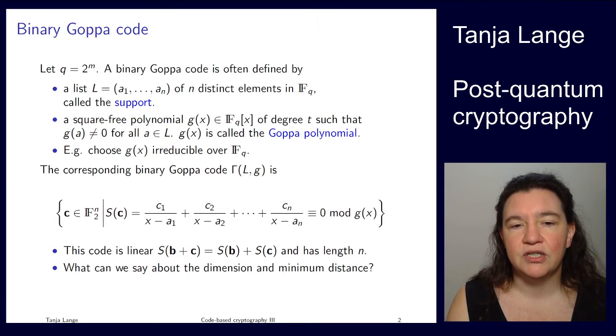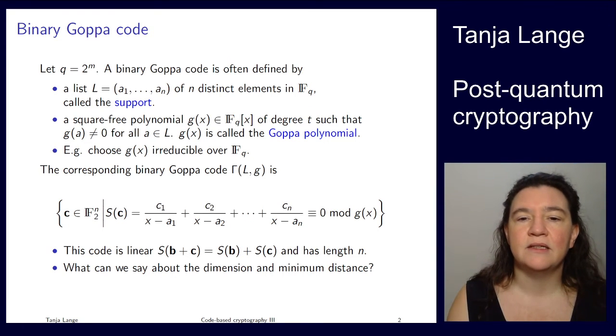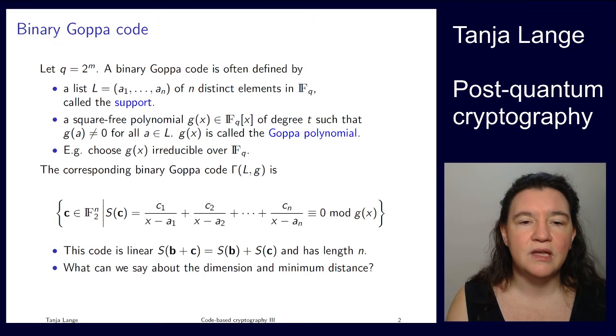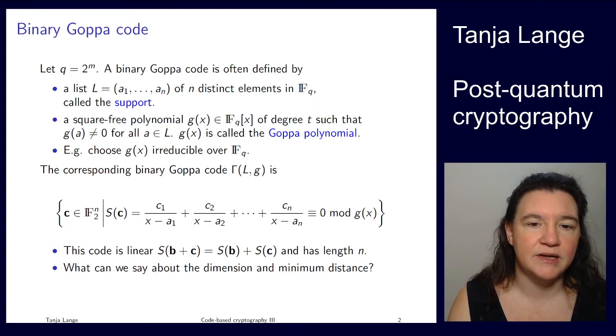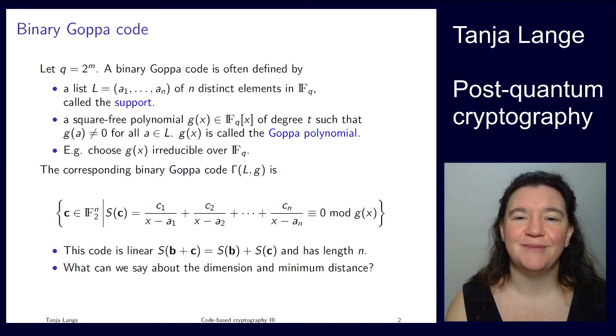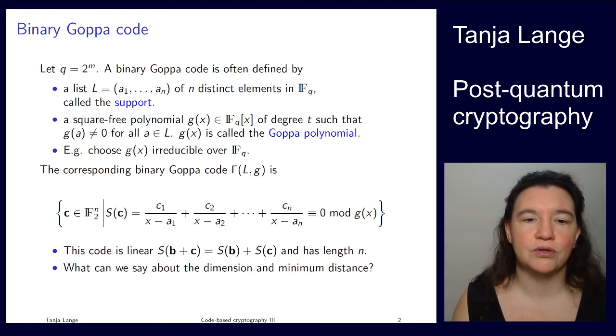And it's such that if you take ci divided by x minus ai, that that is zero congruent to g of x. Now I've been saying polynomial there, so s of c is a polynomial, because the ai's are not roots of g, so we can invert them, or we can invert x minus ai modulo g of x. However, that would be a long polynomial of degree t minus 1 typically, and so it wouldn't fit on the slide. Whereas this is a nice short compact representation.